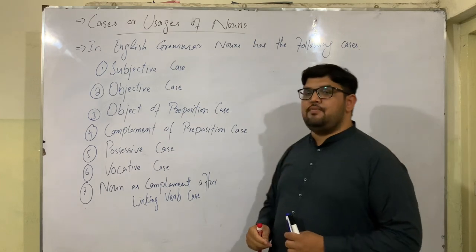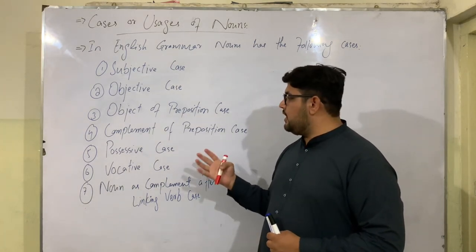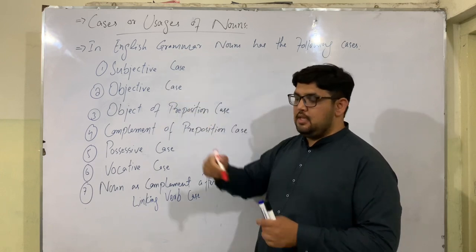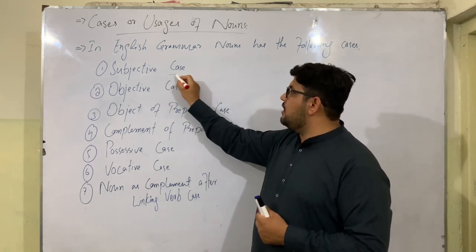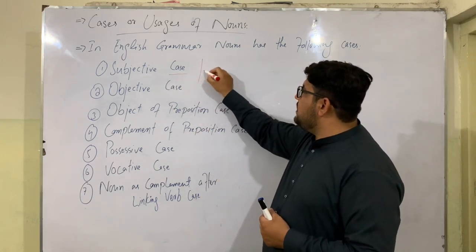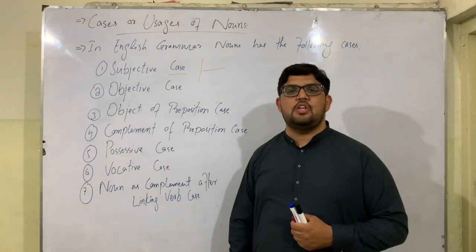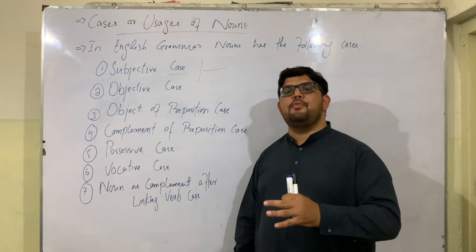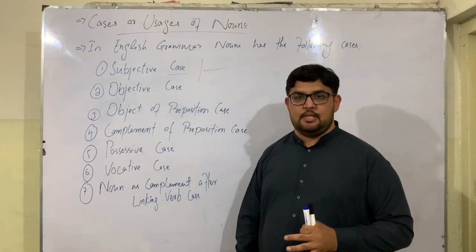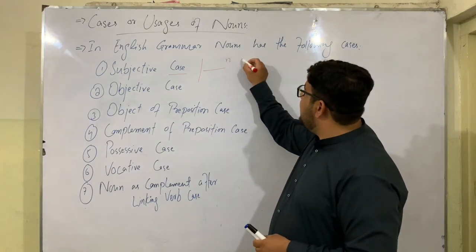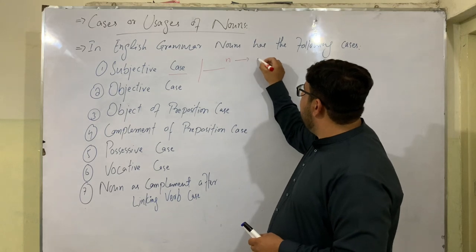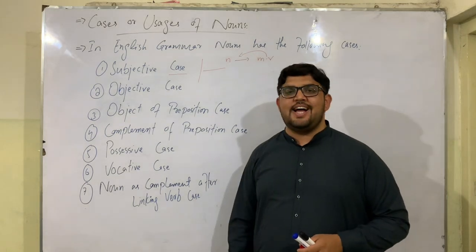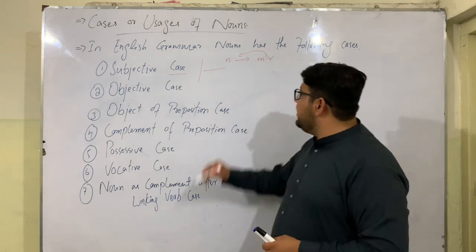In English grammar, nouns have the following seven cases or usages. The first one is the subjective case, also called the nominative case. In this case, a noun comes before the main verb in a sentence to function as the subject of the sentence.